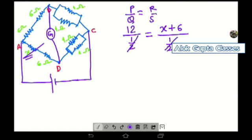So obviously, when solving, half and half directly cancel out. Twelve is equal to X plus six.